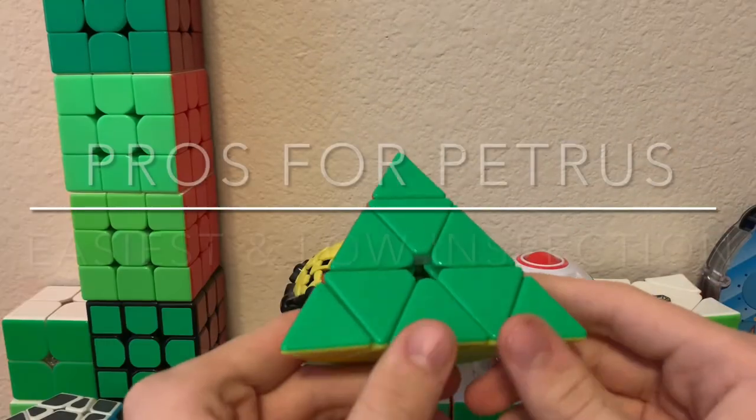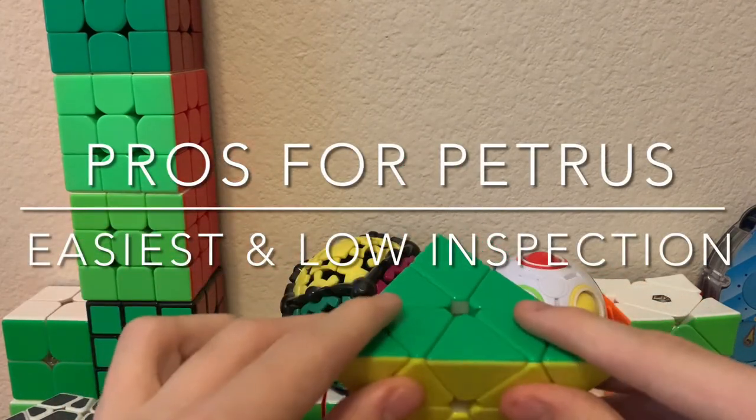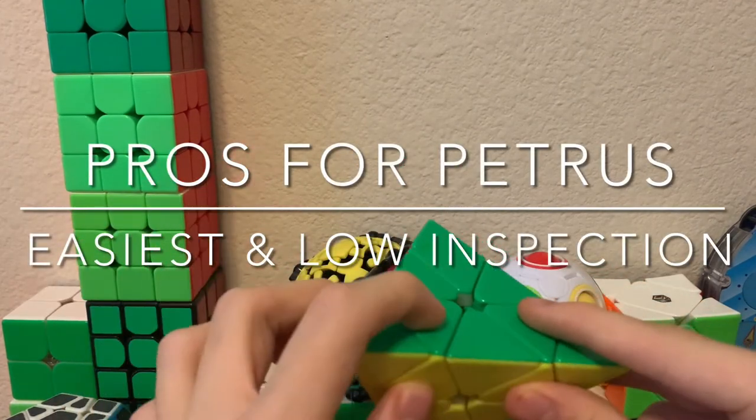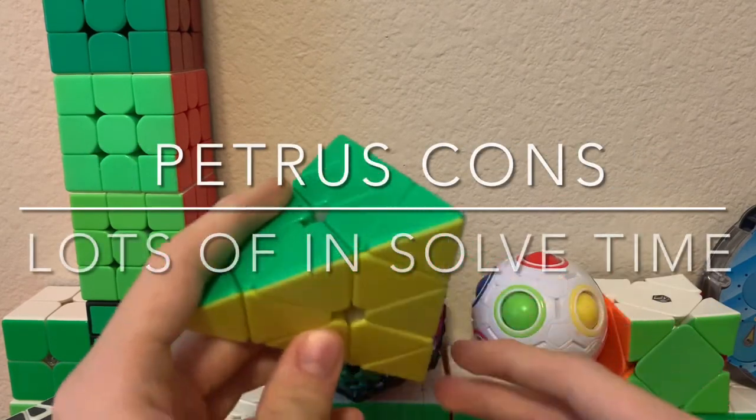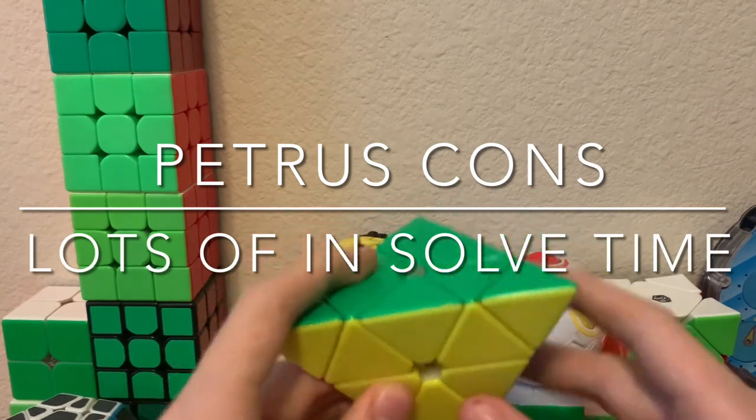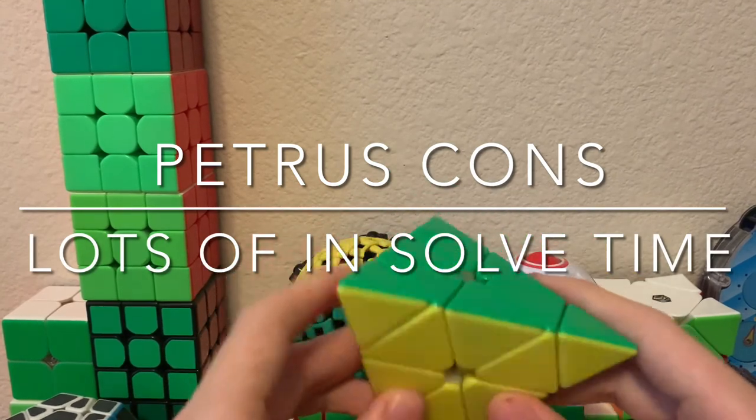The advantages of using Petrus are that it's the simplest of these three to learn and it also uses the least inspection time. But the main drawbacks are that it uses a lot of time during the solve to figure out what edges are oriented and non-oriented.